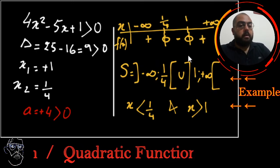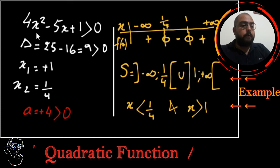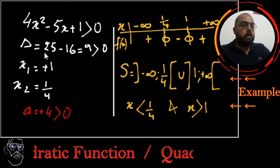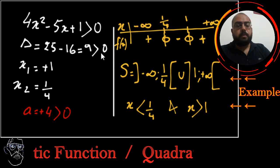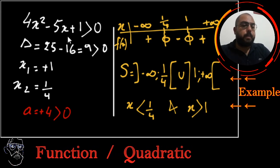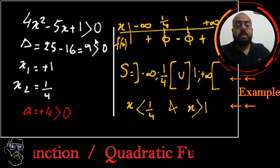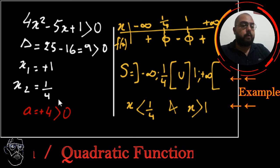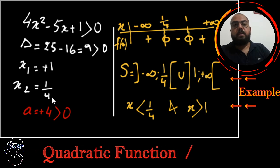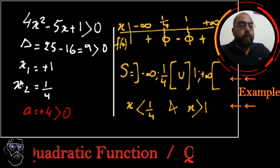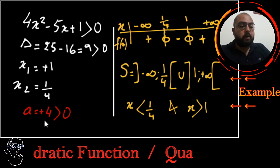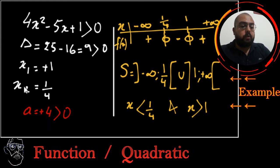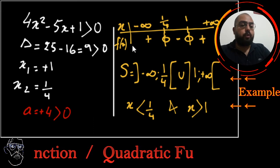Let's take another example: 4x² - 5x + 1 > 0. I can calculate delta: 25 - 16 = 9, which is positive. Or I can simply note that a + b + c = 4 - 5 + 1 = 0, so one root is 1 and the other is c/a = 1/4. I have two real distinct roots. With two real distinct roots and the sign of a, I should go through a sign table.